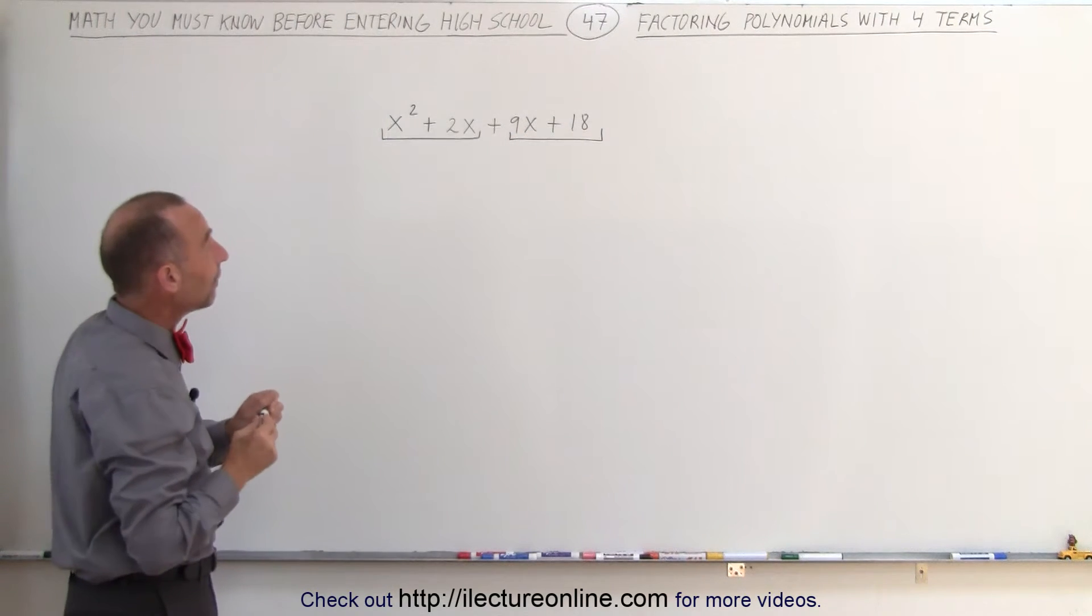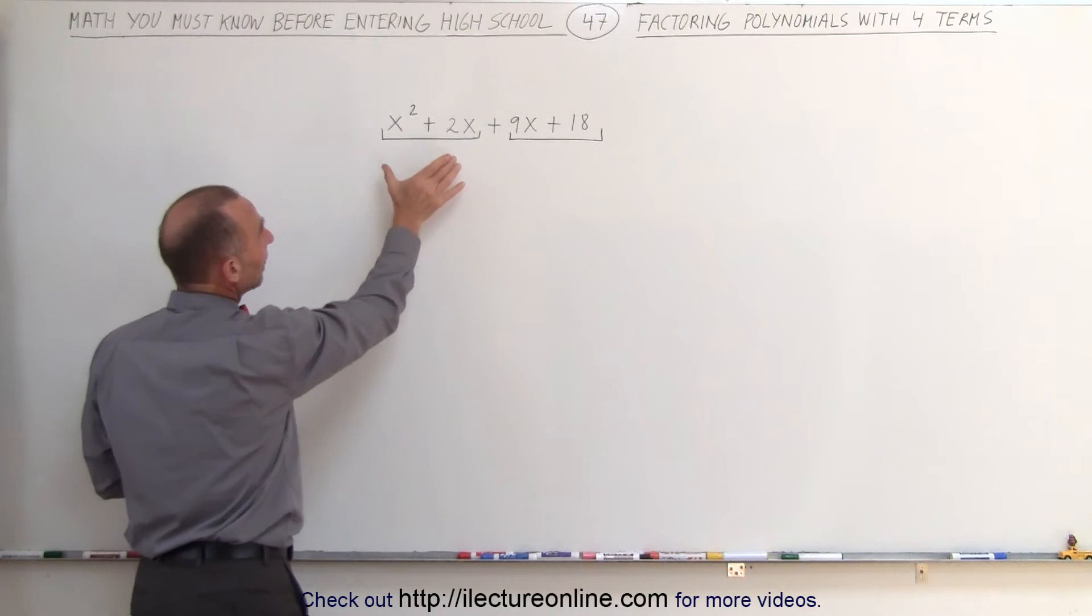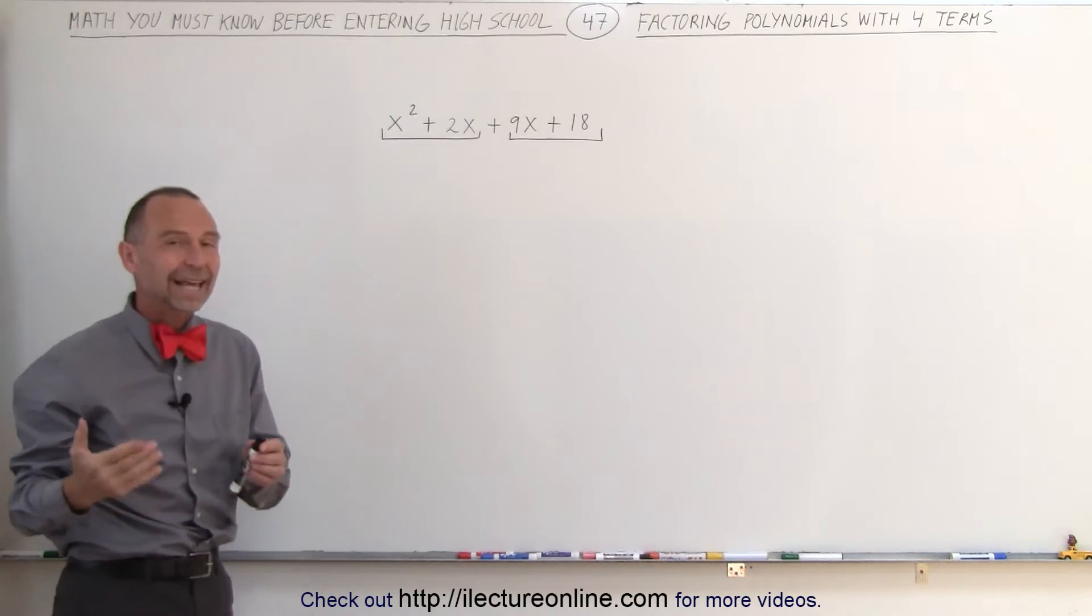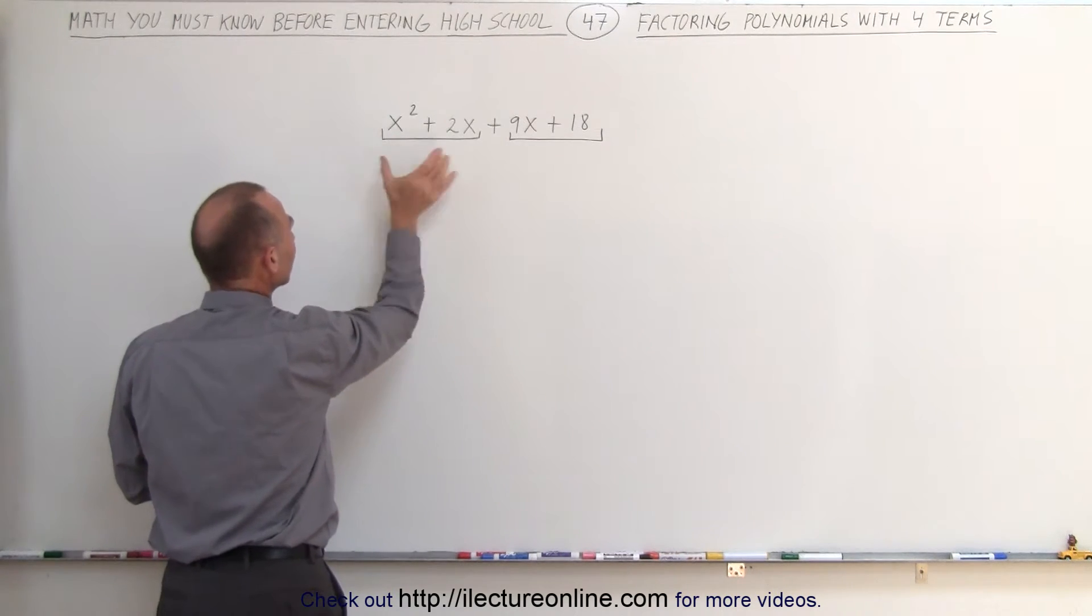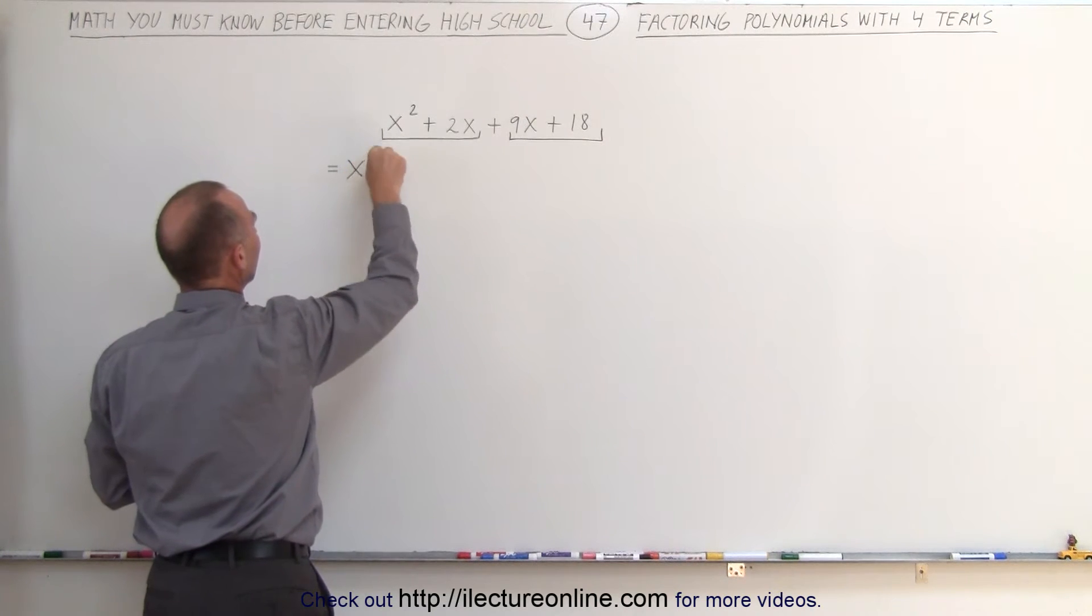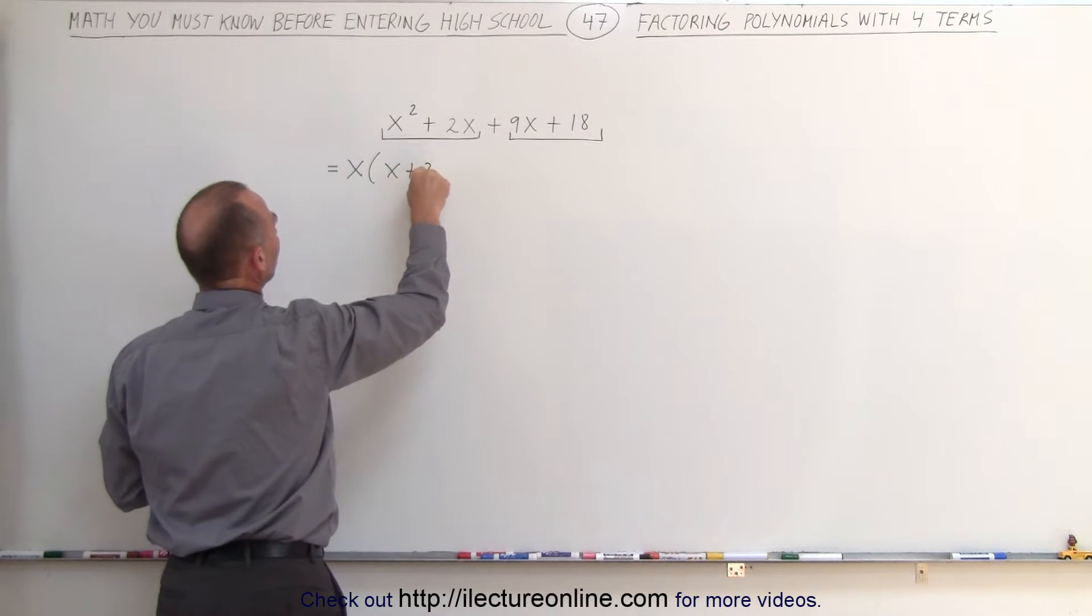All right, the next step is to factor something that's common out of the first two. For example, we have an x squared there. We have a 2x there. You can see then that x is common. That means you can factor out an x from the first two terms and write it as follows: x times x plus 2.